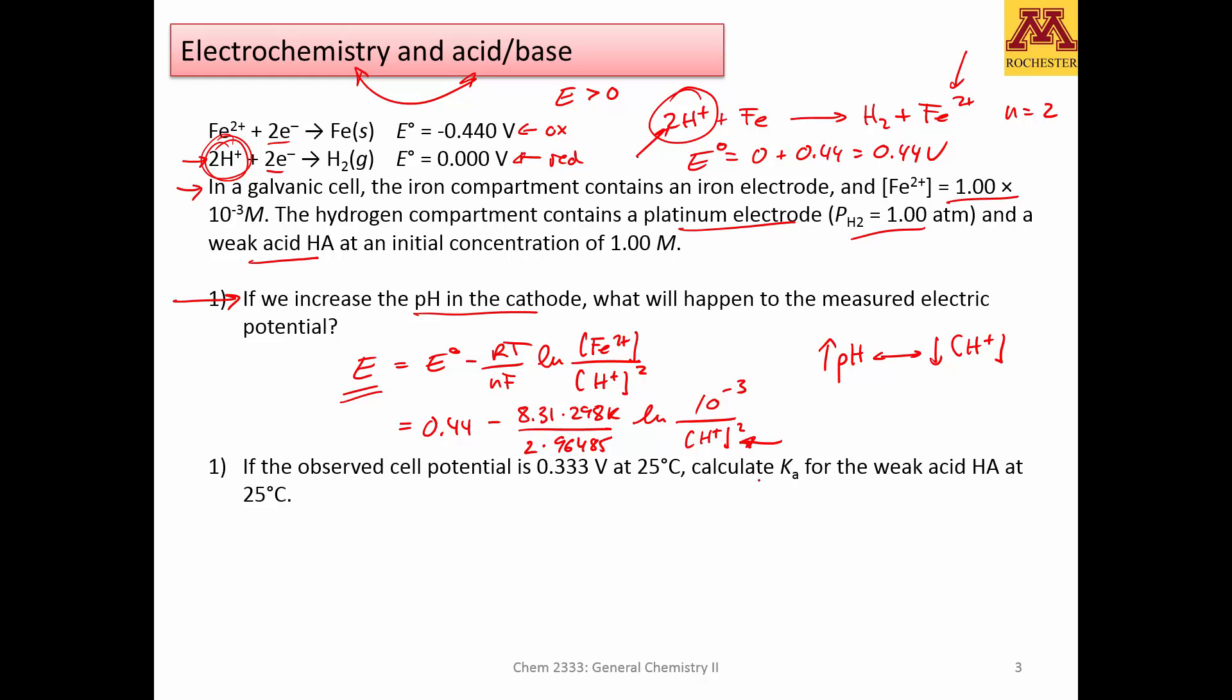If this becomes smaller, what you're actually doing is increasing this ratio. By increasing this ratio, this logarithm will become more positive, and the overall thing is negative. This will decrease the potential. So, in this case, because the hydronium is a reactant, it will make the reaction less spontaneous. It will decrease the cell potential.